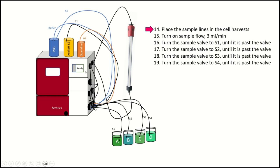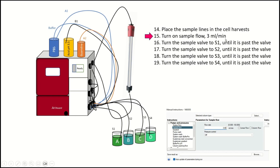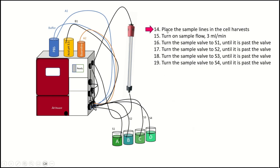Okay. So next we're kind of coming to the end here. So we're going to place the sample lines in each of the cell harvests now that we have them filtered, right? We're going to turn on the sample flow. I like doing something like three mils a minute. If you do one mil a minute, you can do that, but it's going to just take forever. You want to do something close to the sample flow rate.